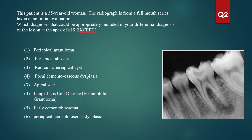This is a posterior tooth, number 19. It could be a periapical granuloma — yes, this can be included. It could be a periapical abscess — yes. It could be a radicular cyst or periapical cyst — yes, it does look similar. It could be focal cemento-osseous dysplasia — yes, the focal ones are usually in the posterior areas. It could be an apical scar — yes. It could be Langerhans cell disease or eosinophilic granuloma — yes, this could be a granuloma.